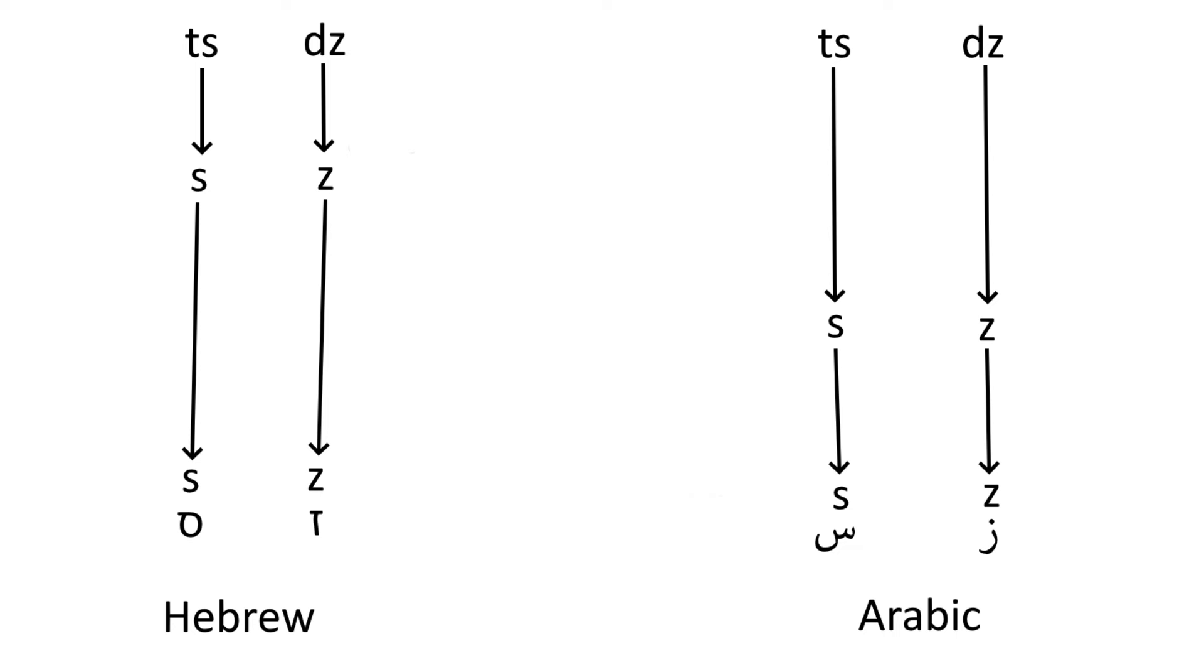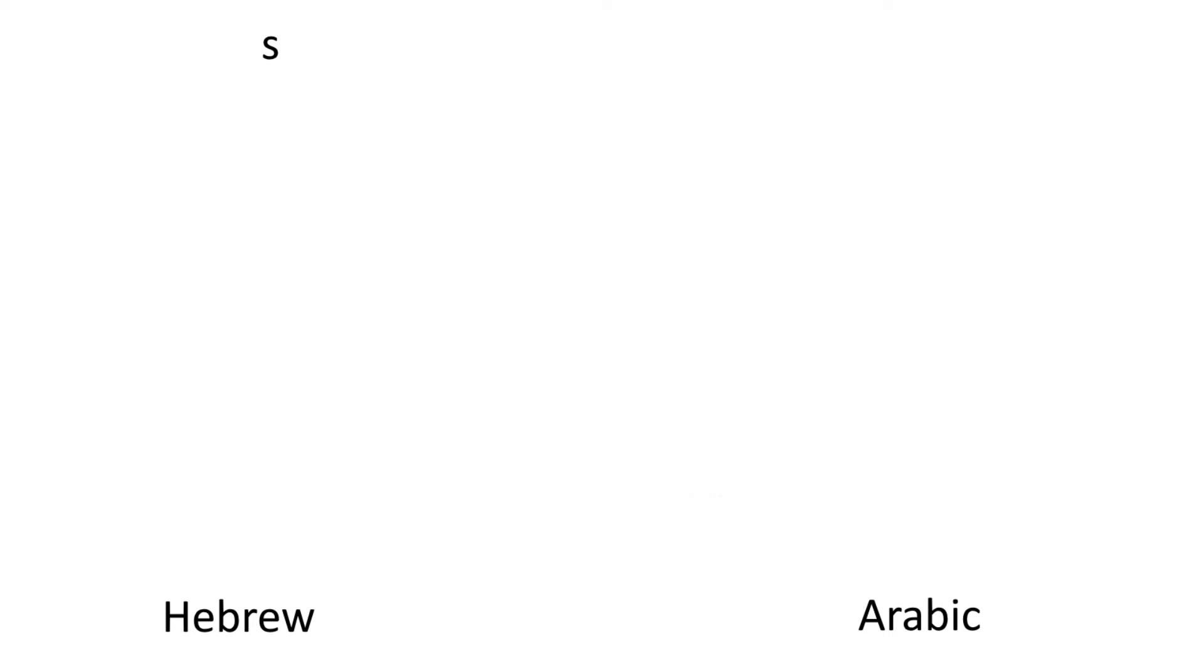Proto-Semitic also had an S sound, a retracted S sound probably, somewhat between a typical S and a Sh sound, just like Proto-European or Latin. This is one very important distinction in the phonology of Hebrew and Arabic.